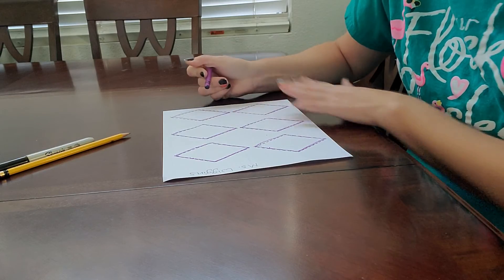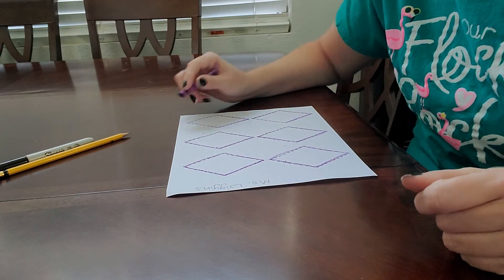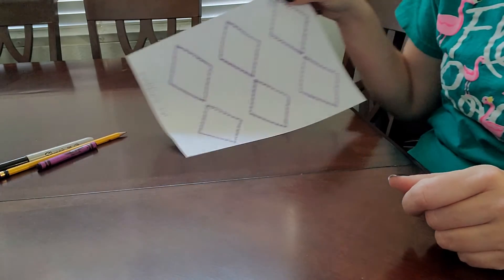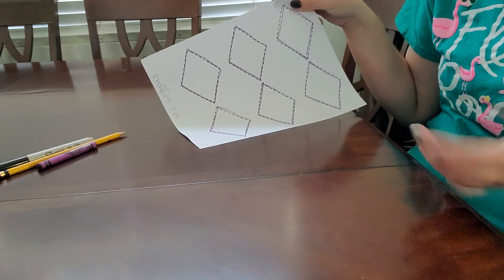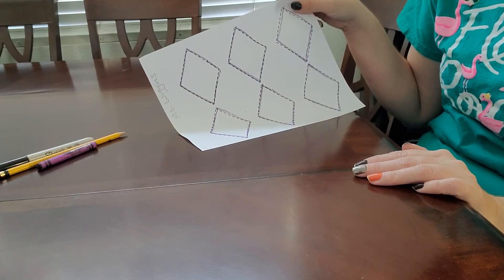Usually when they're all equal, it's called a rhombus. And like that, my friends, we're all done. Great job. That was super easy, huh?